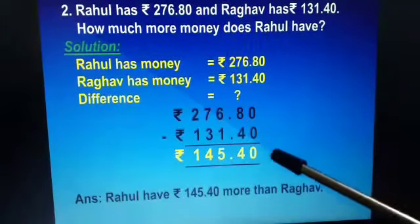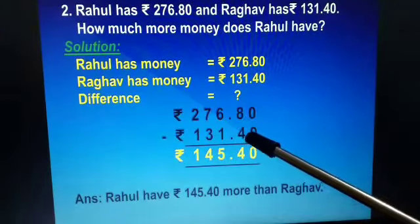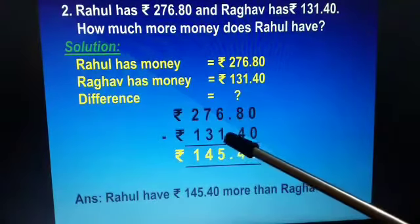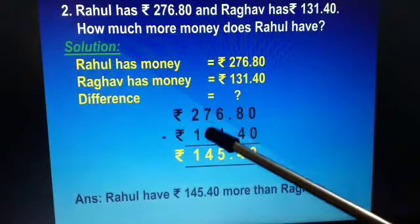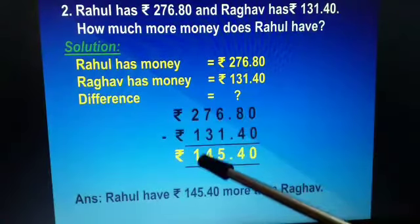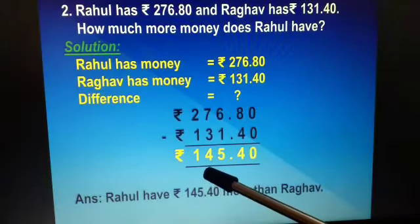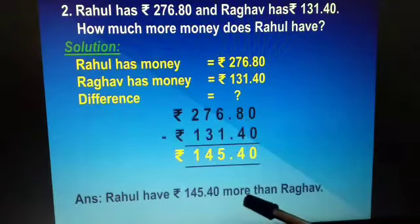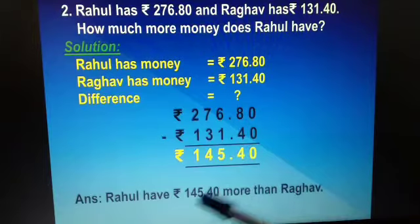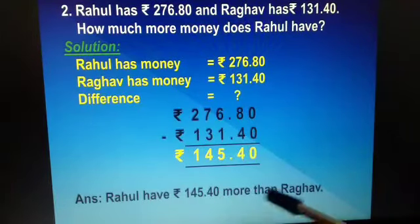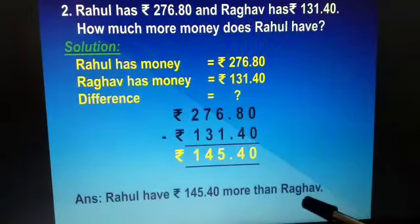Now: 0 minus 0 is 0; 8 minus 4 is 4; 6 minus 1 is 5; 7 minus 3 is 4; and 2 minus 1 is 1. So Rahul has rupees 145 and 40 paise more than Raghav.